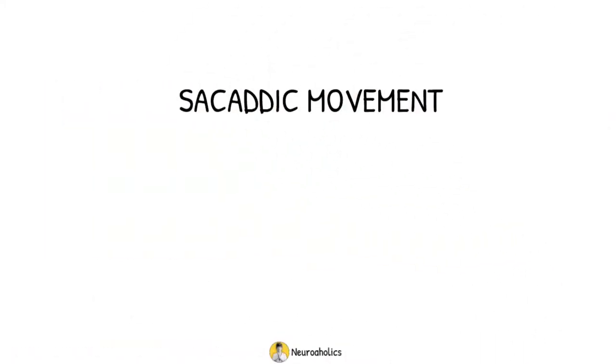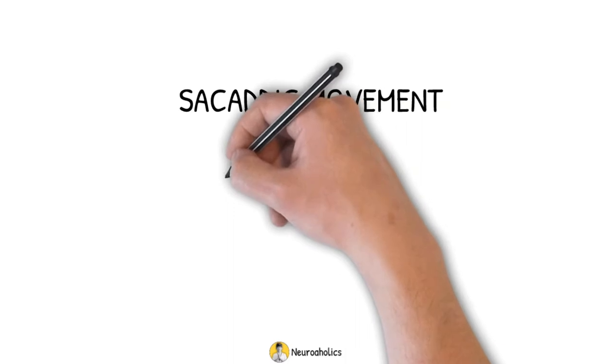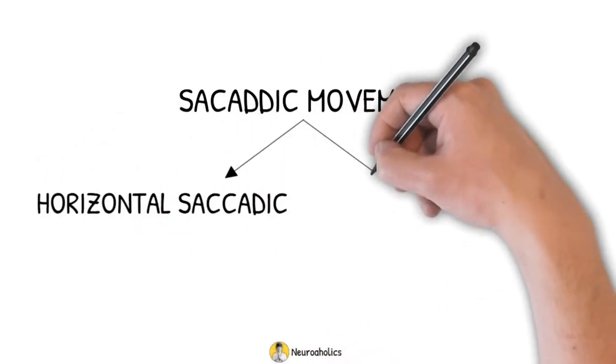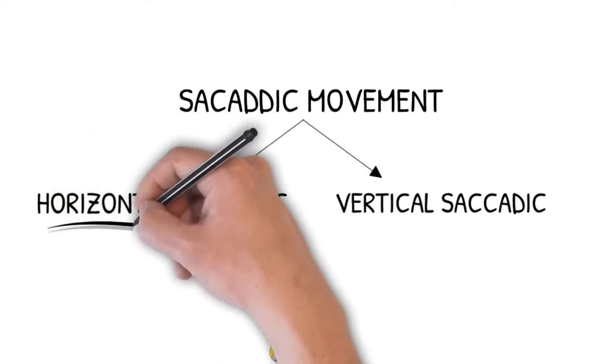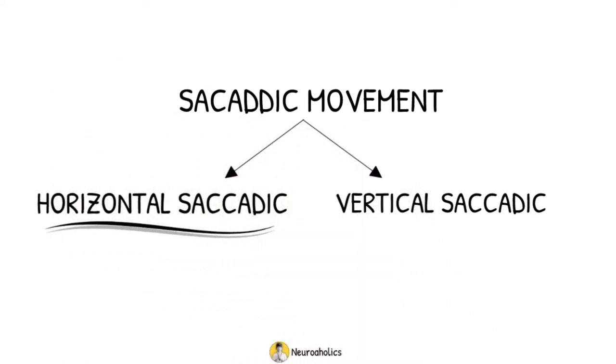The saccadic movement can in turn be horizontal or vertical. In horizontal saccadic, the eyes move horizontally and in vertical saccadic, the eyes move up and down. Let us now understand the pathway of the horizontal saccadic.